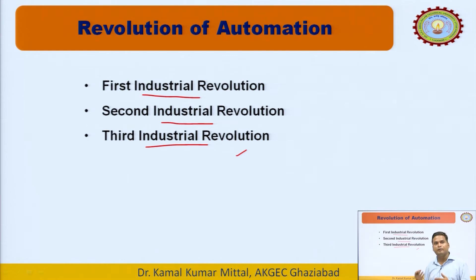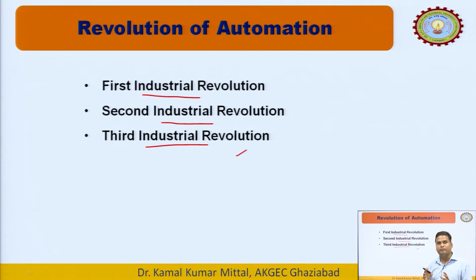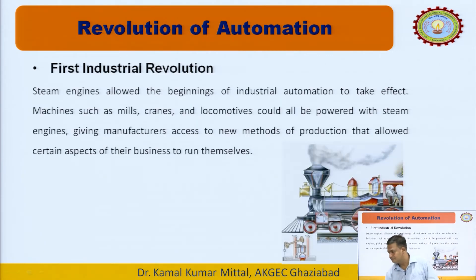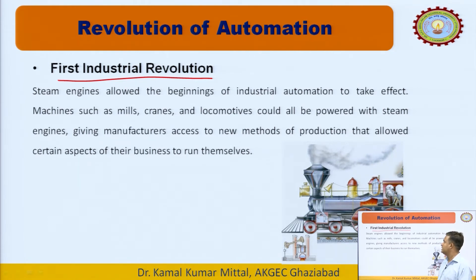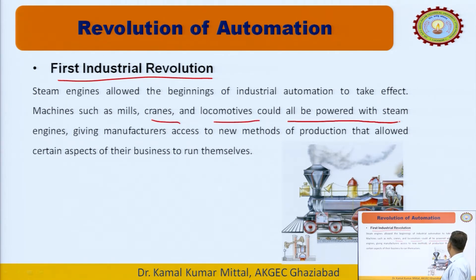In the third industrial revolution, programmable sorts of things mean we can save instructions and make changes when a new set is given. The program is editable and we can produce products accurately with minimum time. Regarding the first industrial revolution: steam engines allowed the beginnings of industrial automation to take effect. Machines such as mills, cranes, and locomotives could all be powered with steam engines.